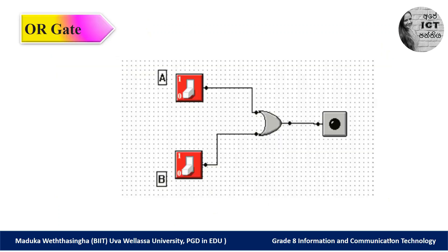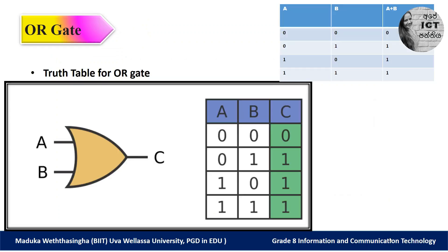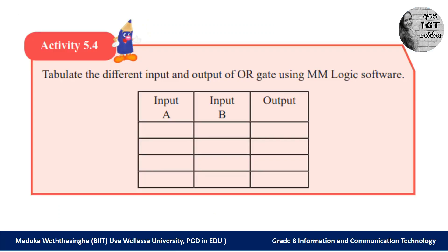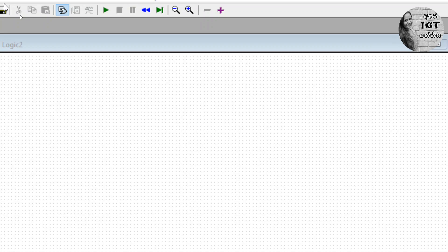Now let's go to the OR gate. This is the circuit we create to identify the function of the OR gate. Here you can see the truth table for the OR gate. It's just like addition — always if one or both inputs are true, our output is true. Now let's create this circuit using MM Logic software and identify the function of the OR gate.